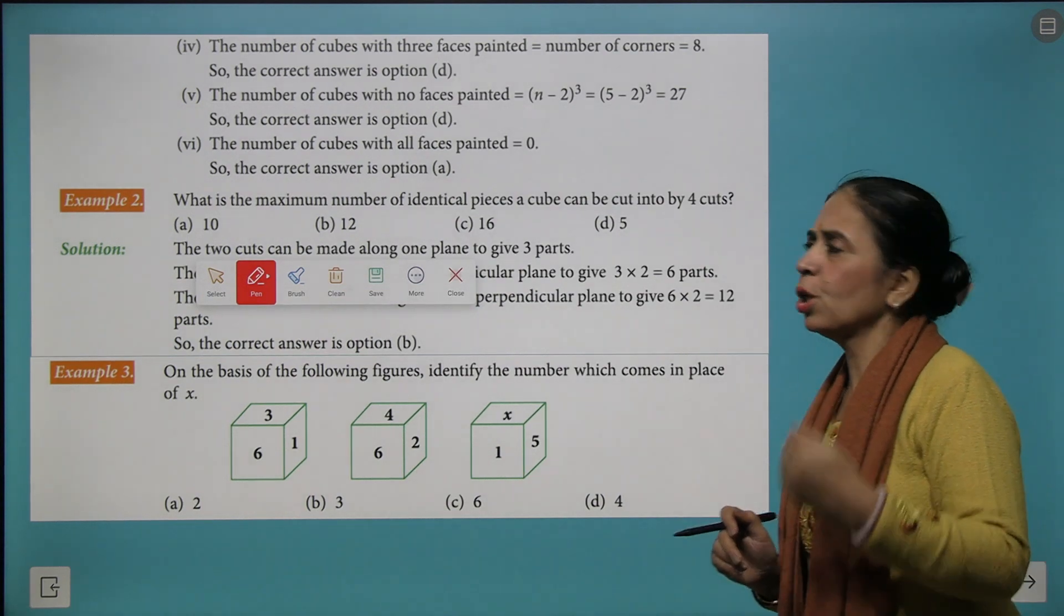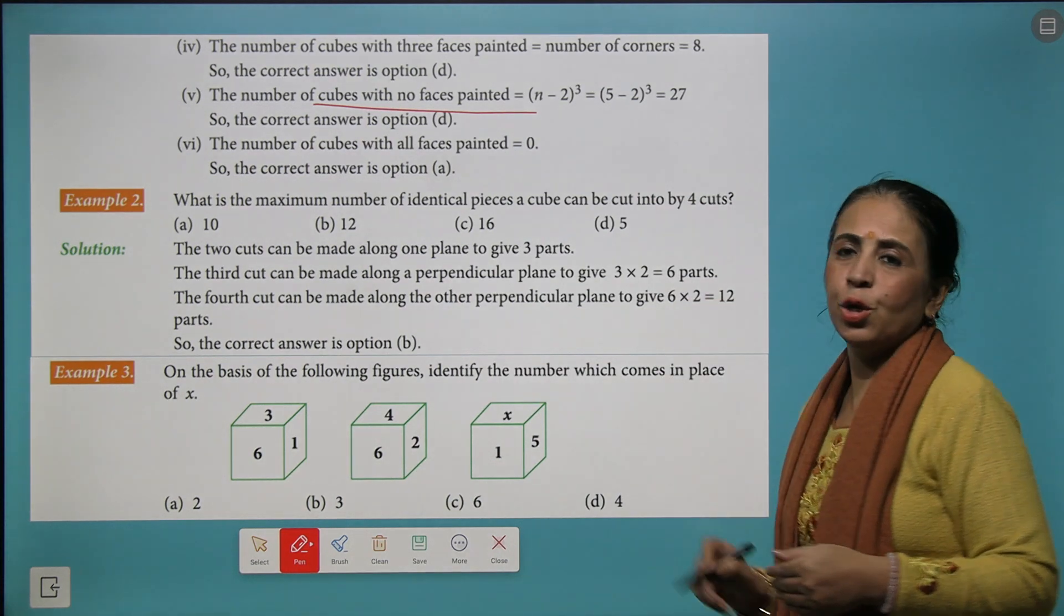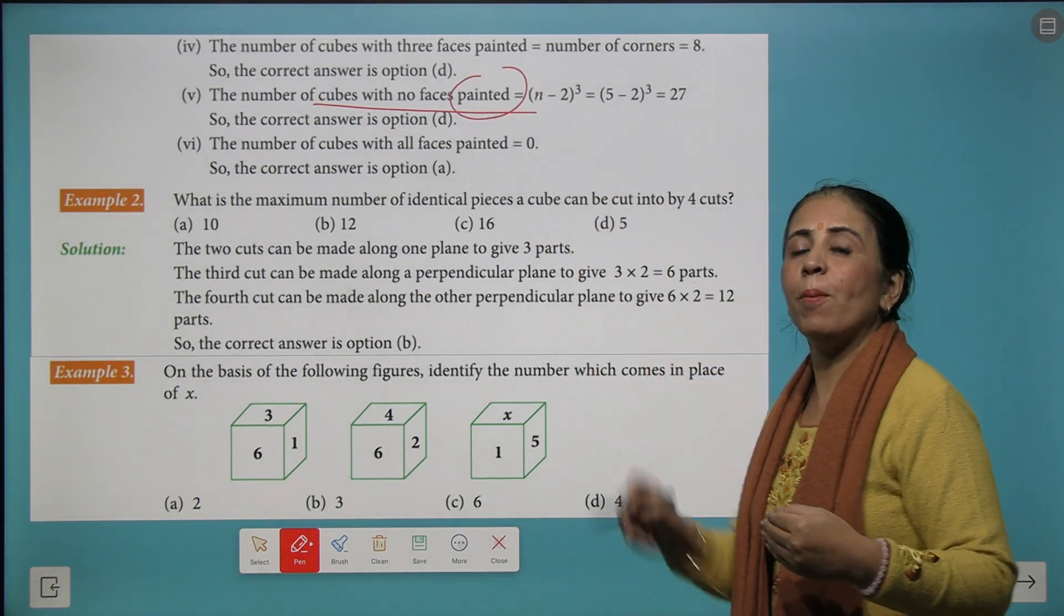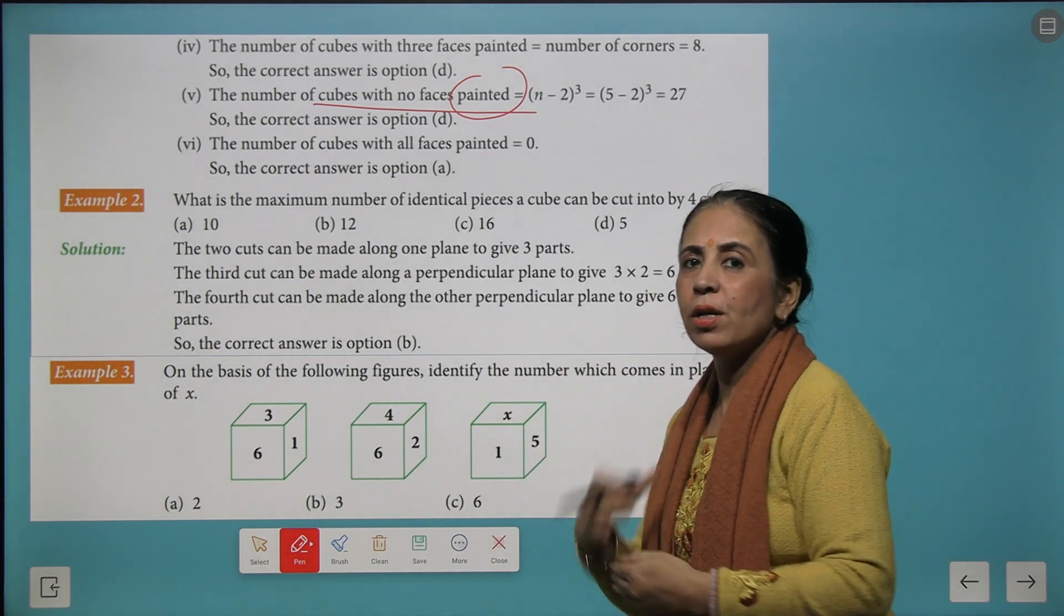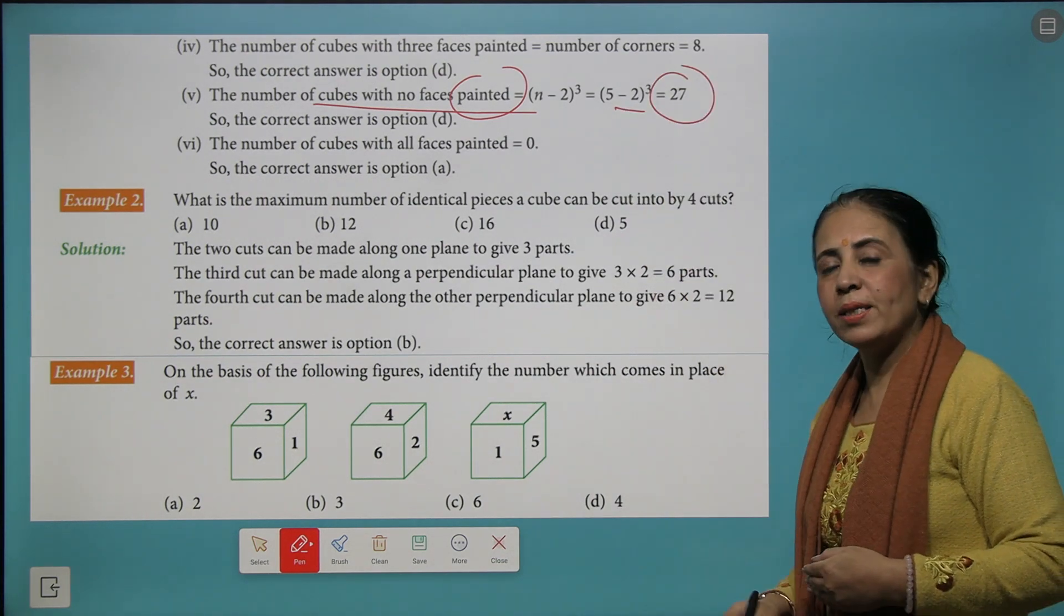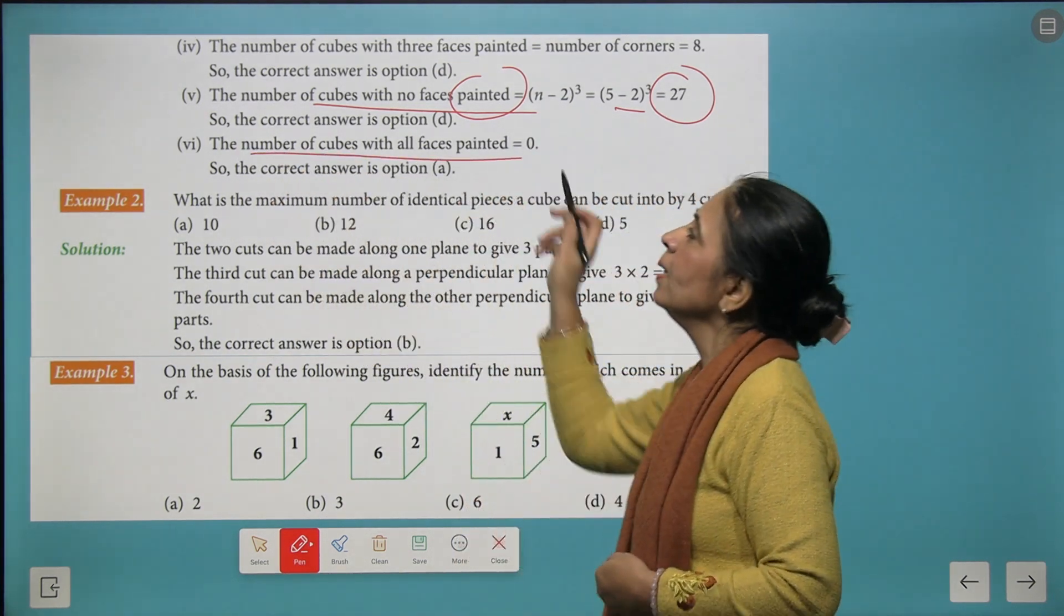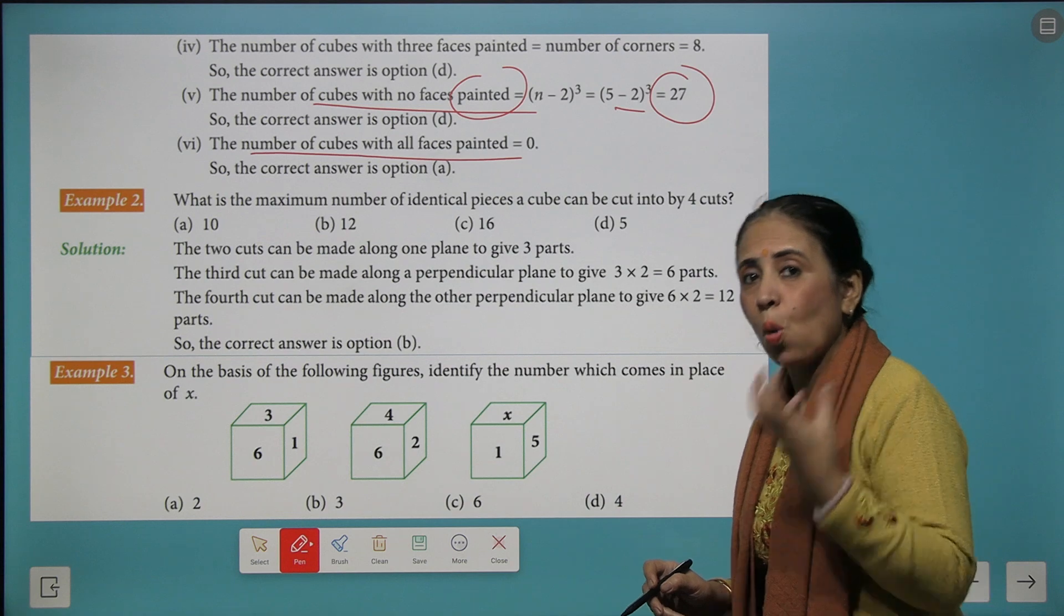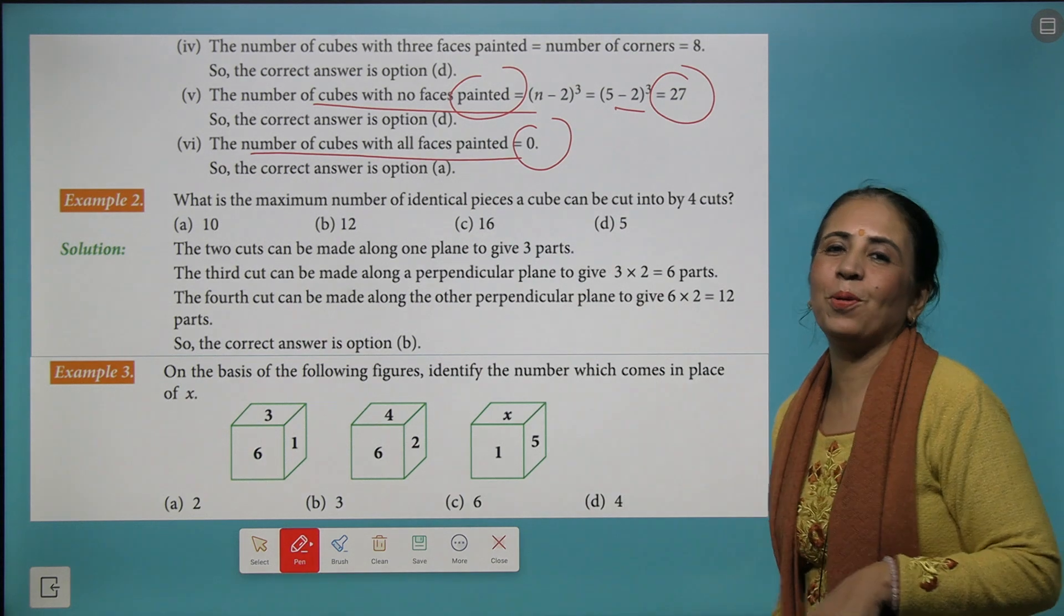Let's look at the next question, the question says you need to find the number of cubes with no face painted. So the formula said it is n minus 2 cubed, so 5 minus 2 is 3 and 3 cubed becomes 27. And we have a last question, that do we have any cube which has all the 6 faces painted? No, so the answer is 0.